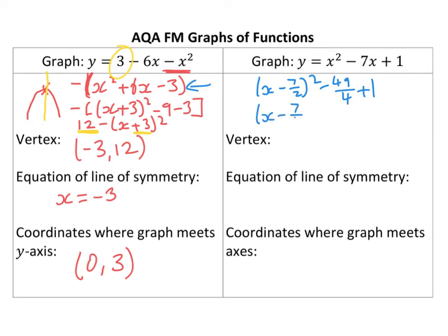Which is going to give me, when I simplify, minus 45 over 4, and so the vertex is going to be at 7 over 2, minus 45 over 4. Okay, now, the equation of line of symmetry, x equals 7 over 2, nice and easy.